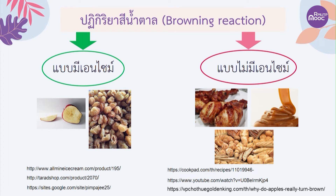การเกิดปฏิกิริยาสีน้ำตาล เพื่อให้จำได้ง่ายๆ มันเกิดมาจาก 2 แบบ แบบแรกคือเพราะมี Enzyme เข้ามาเกี่ยวข้อง ก็จะเป็นการเกิดปฏิกิริยาสีน้ำตาลแบบมี Enzyme มาเกี่ยวข้อง หรือก็คือ Enzymatic Browning Reaction ซึ่งส่วนใหญ่แล้วจะเป็นผักผลไม้ เพราะว่าผักผลไม้เหล่านี้มี Enzyme ในกลุ่มของสารประกอบ Phenol ที่ทำให้เกิดการเปลี่ยนสีเป็นสีน้ำตาล